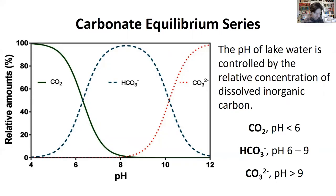The pH of lake water actually changes a little bit over seasonal timescales and also over diurnal — day and night — timescales. Primarily, those seasonal changes in lake water pH are due to a series of biochemical processes, namely photosynthesis and then the reverse of that, which is oxidation or respiration.